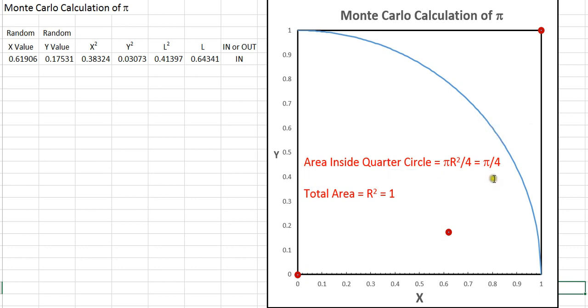The area inside this quarter circle would be pi r squared over 4, but since r is 1, it's pi over 4. And the total area of this square is r squared, and since r is 1, again it's 1.